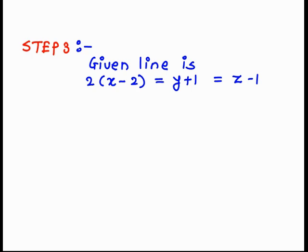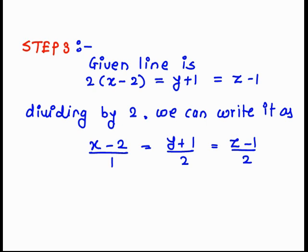First, we want to find ā. The given line is 2(x-2) = y+1 = z-1. To find the vector, we make the coefficient of x equal to 1. The coefficients of y and z are already 1, so we divide throughout by 2. After dividing by 2, we get the coefficients of x, y, z in the numerator as 1, and in the denominator we get the DRS of the line.